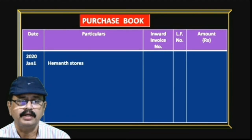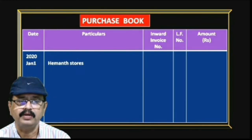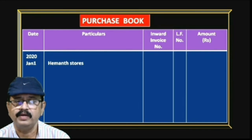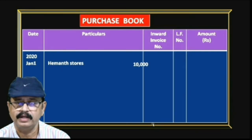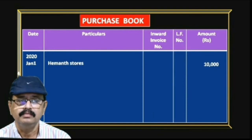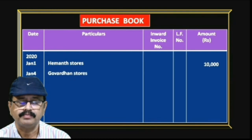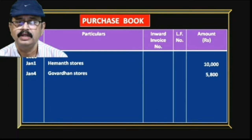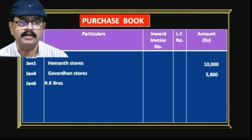In the date column we write January 1st 2020. In the purchase book we write only the name of the trader, so we write Hammond Stores. The inward invoice number and LF number columns are left blank, and in the amount column we write 10,000. Next, January 4th — purchased goods from Govardhan Stores — we write Govardhan Stores and the amount 5,800.